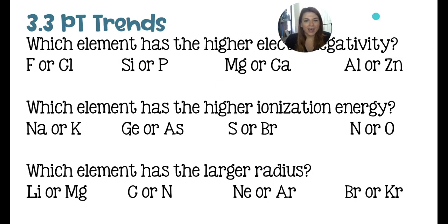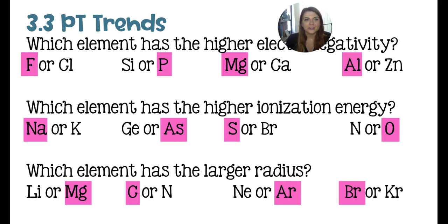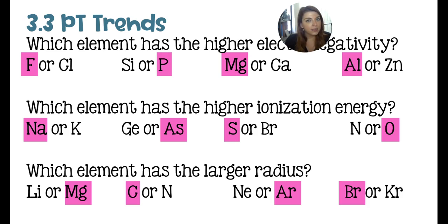Periodic table trends. Here I have four examples asking which of the two elements has a higher electronegativity, a higher ionization energy, and a larger radius. You should be able to use the lucky corner method — which element is closer to fluorine or francium for their respective trends. The elements with higher electronegativity are going to be closer to fluorine, which has the highest electronegativity at 4.0. For electronegativity, it is the element most to the top and most to the right of the table. For ionization energy, it is the same concept — choose the element closest to the top or closest to the right for each pair.